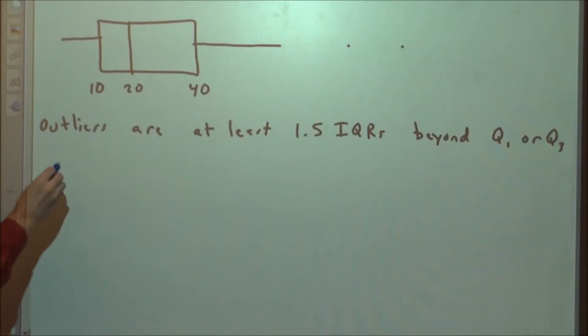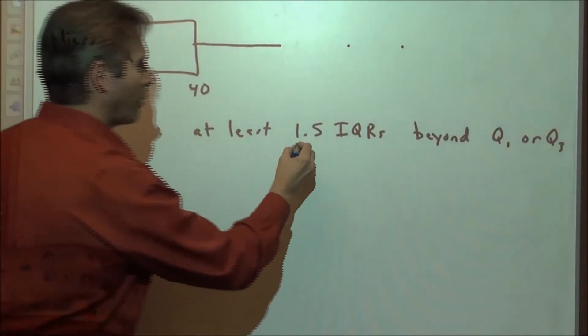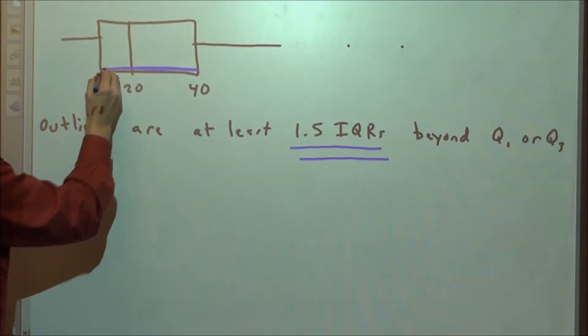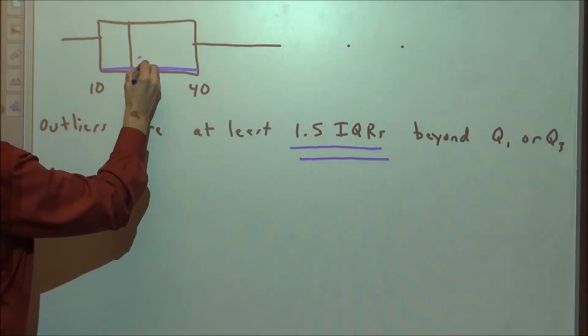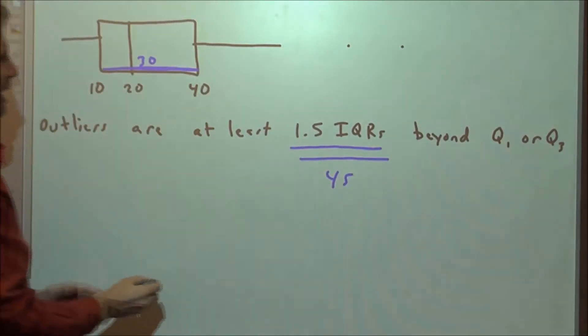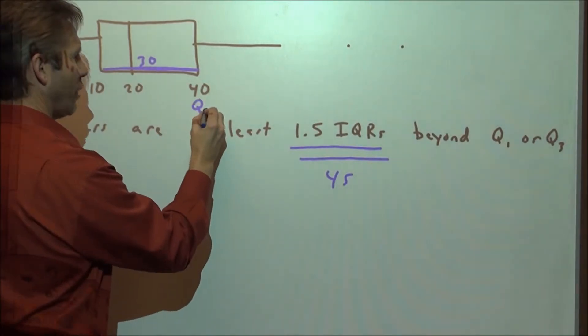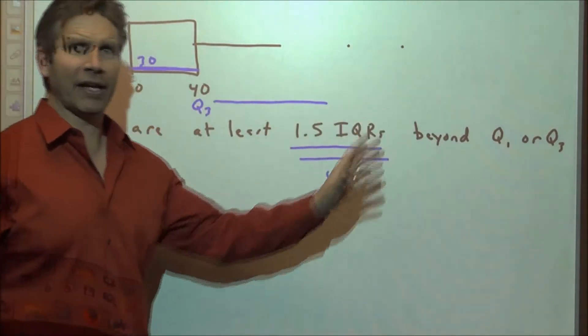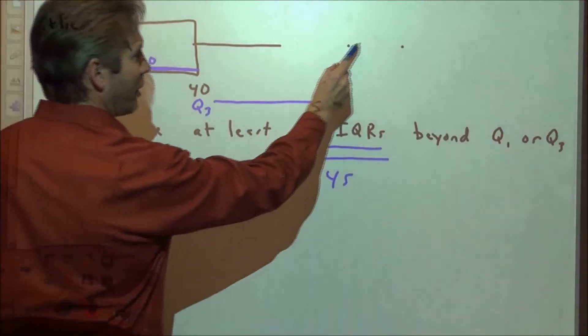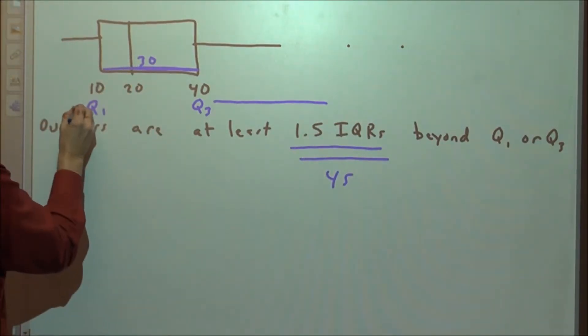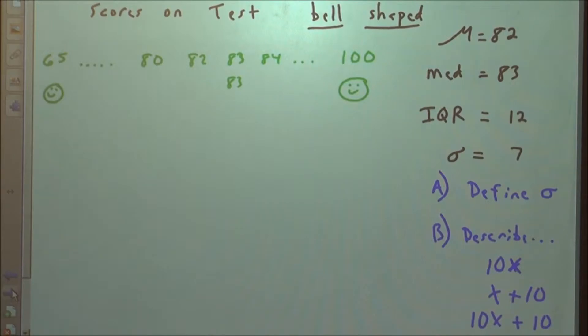A couple more things. Remember how outliers are found. They have to be at least 1.5 interquartile ranges beyond Q1 or Q3. Here's the interquartile range right here from 10 to 40. That's a distance of 30. If we take 1.5 times the 30, that's going to give us 45. So starting at Q3, if you add 45 to that, any data point beyond that is considered an outlier. If we go this way beyond Q1, there's nothing that's more than 45 units below that, so no outliers on the left side.